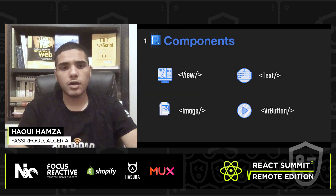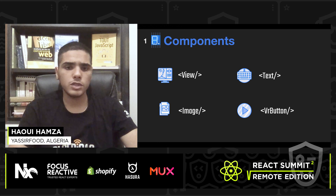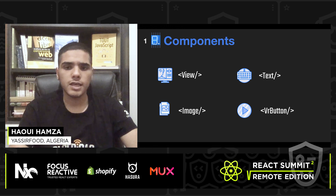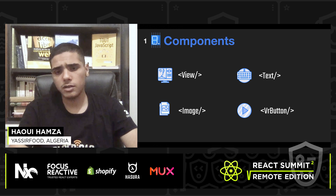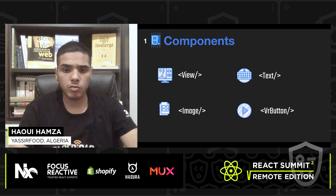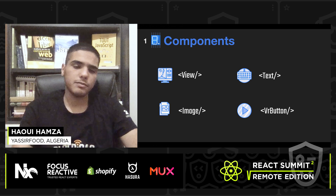For the components, we have four main components. First, the View, which is kind of like a div, then the Text component, the Image component, and the VR Button which is a normal button but for VR.